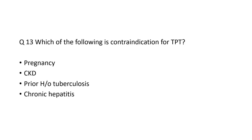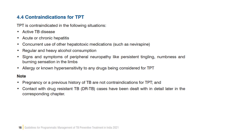Next question: which of the following is a contraindication for TB preventive therapy? Options are pregnancy, CKD, prior history of TB, and chronic hepatitis. From the 2021 guidelines for programmatic management of TB preventive therapy, pregnancy and previous history of TB are not contraindications for TPT. CKD is also not a contraindication. The only answer is acute and chronic hepatitis.